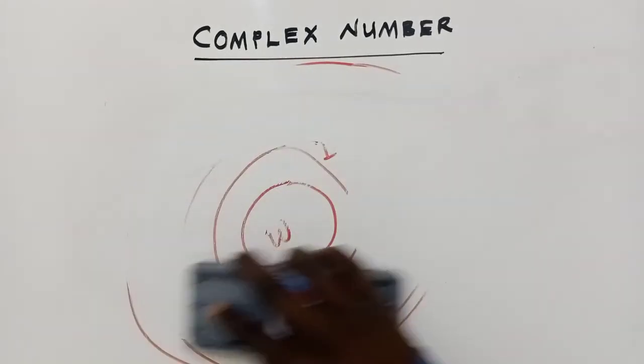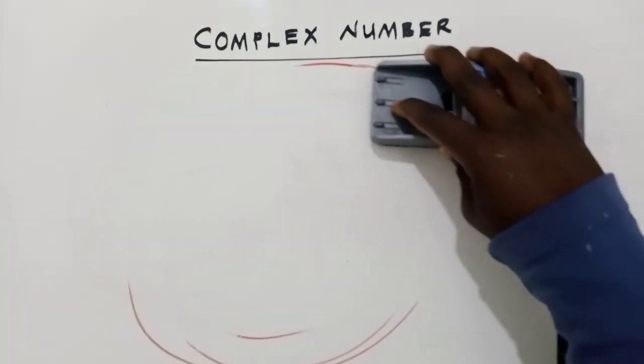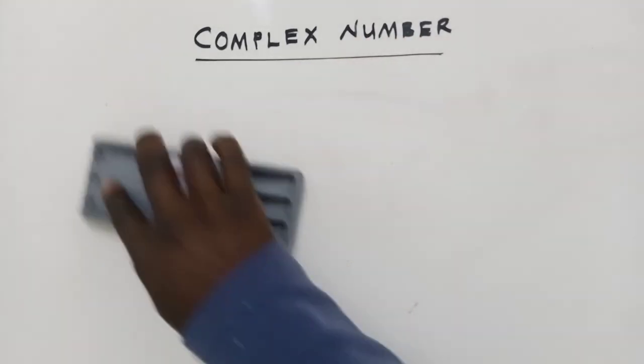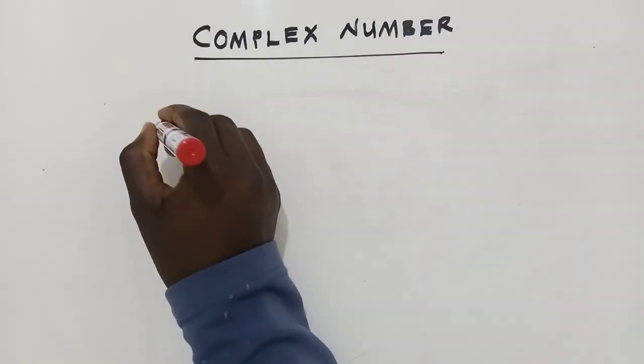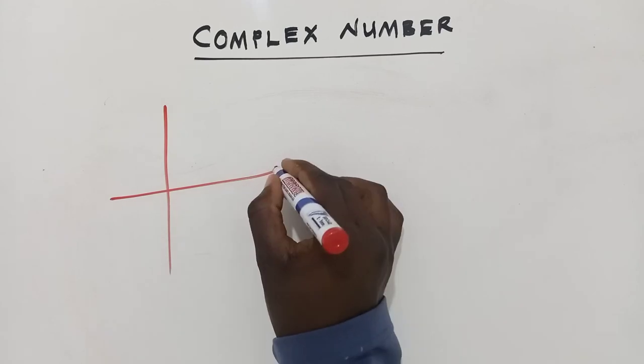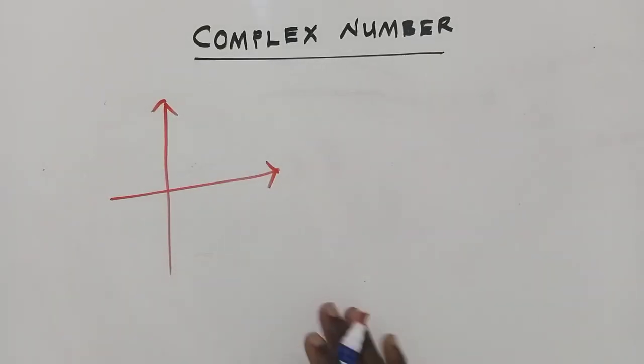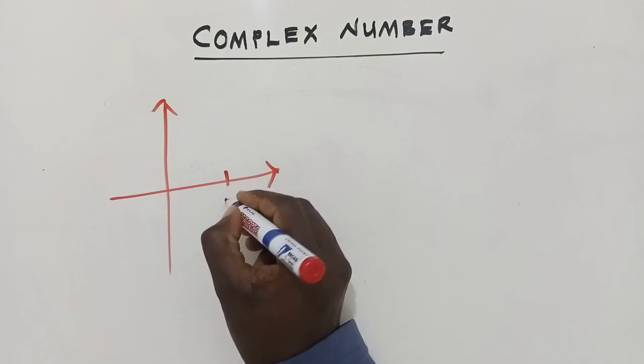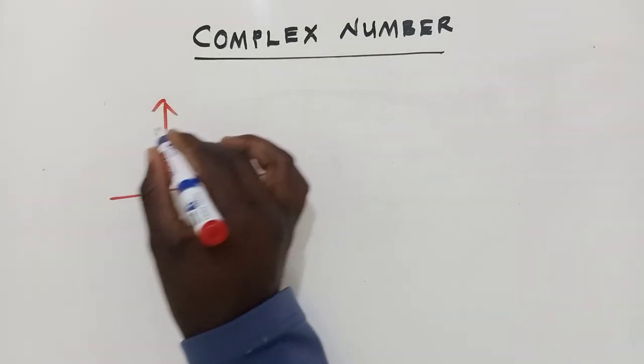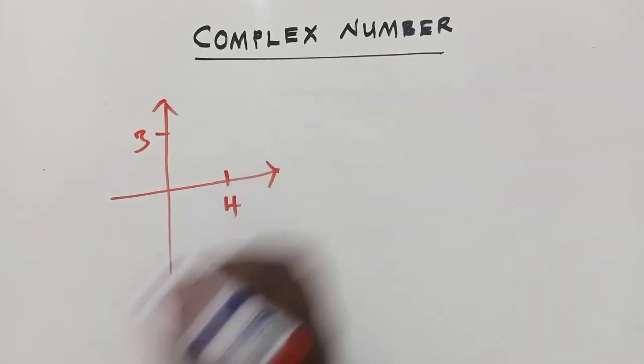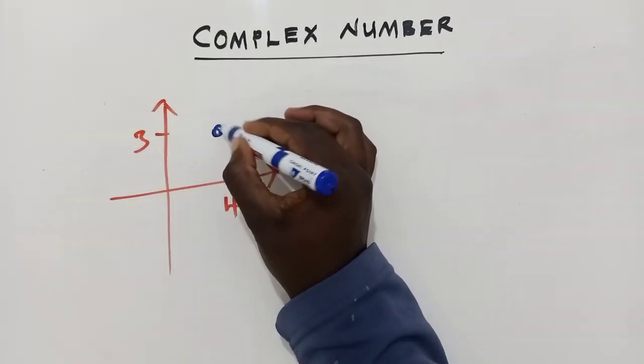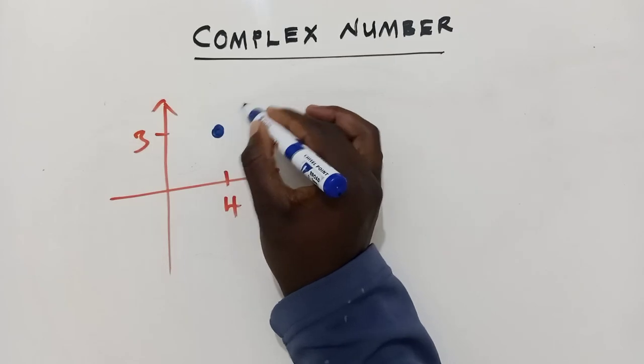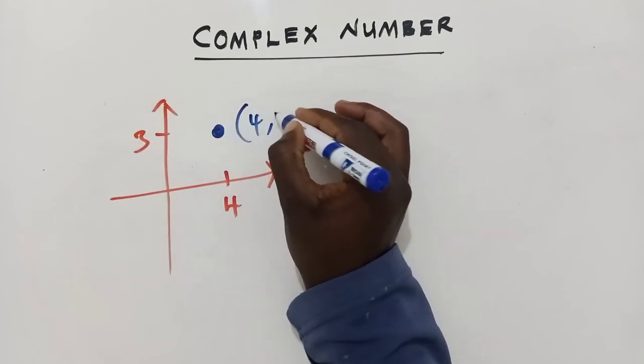So a complex number, if you don't want to say complex number, you can just say it's a point. So a complex number is also a point. For example, if you have a Cartesian plane. You have got a Cartesian plane. And here you have got a 4, or here a 3. So this complex number, this point here. We know that this is a point here. It is (4,3). This is (4,3).